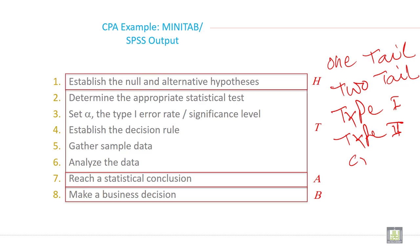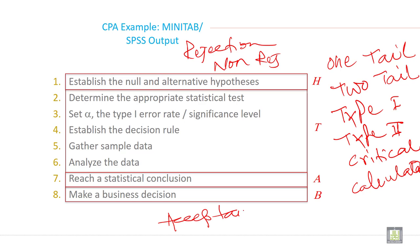Then critical value. Calculated value. Rejection area. Non-rejection area. Acceptance area.